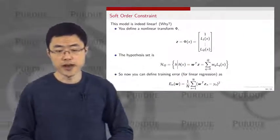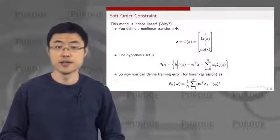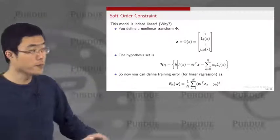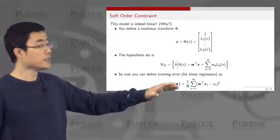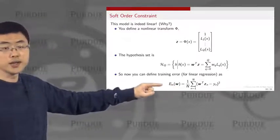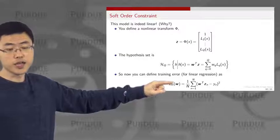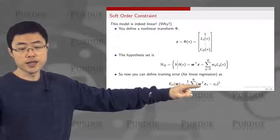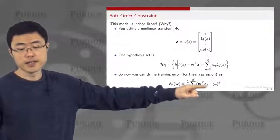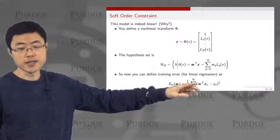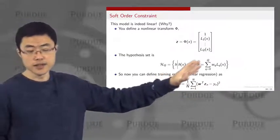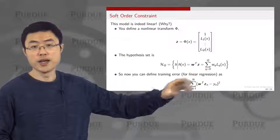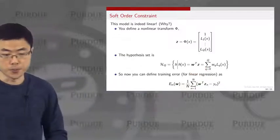You can define the training error through linear regression as the empirical average of (w-transpose z_n minus y_n) squared, where z_n is the n-th transformed input and y_n is the label.